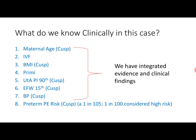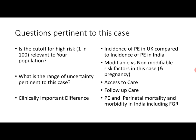The algorithm gave a preterm preeclampsia risk of 1 in 105, with a cutoff of 1 in 100 to categorize women as low or high risk. You need to consider whether 1 in 105 falls within a margin of uncertainty — a gray zone where you're not sure it is definitely low risk or definitely high risk. Is there a range of uncertainty around this point estimate that accounts for such gray zones?